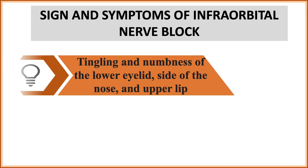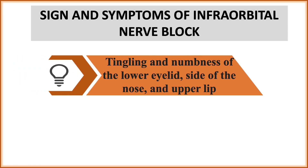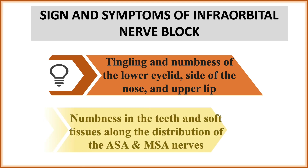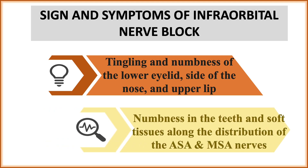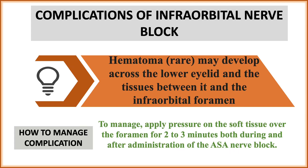Signs and symptoms of infraorbital nerve block: tingling and numbness of the lower eyelid, numbness of the side of the nose and upper lip, and numbness in the teeth and soft tissue along the distribution of the anterior superior alveolar and middle superior alveolar nerve.